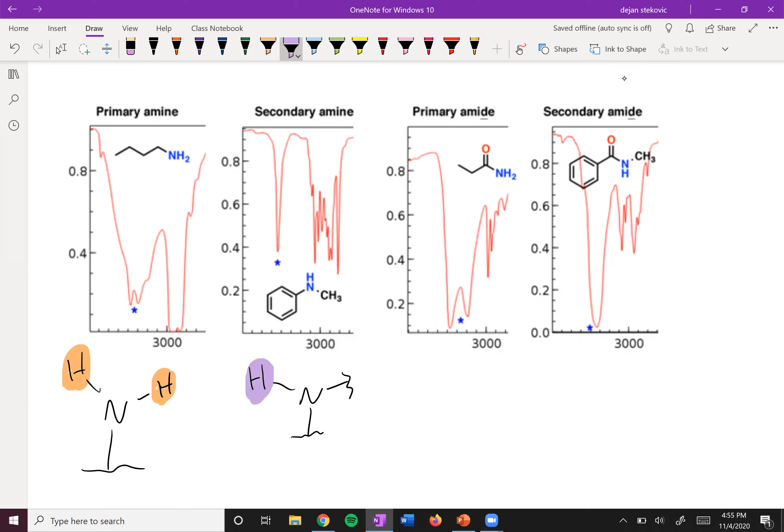A secondary amine will only have one H on it, so you'll see only one peak. That'll look more alcohol-y.